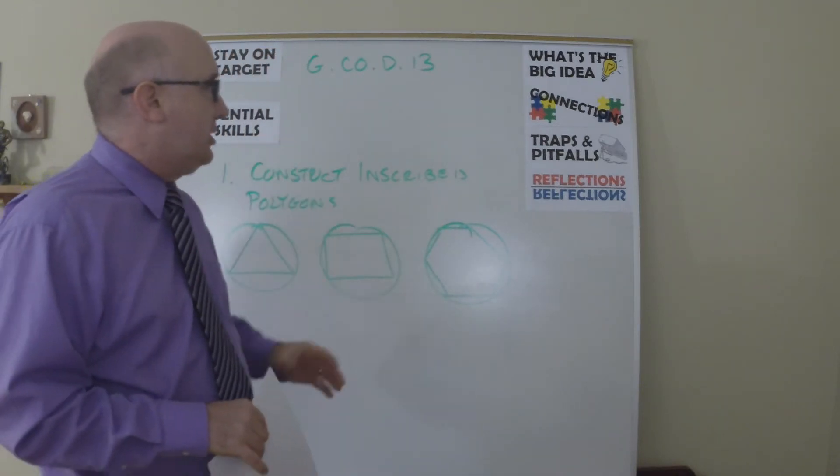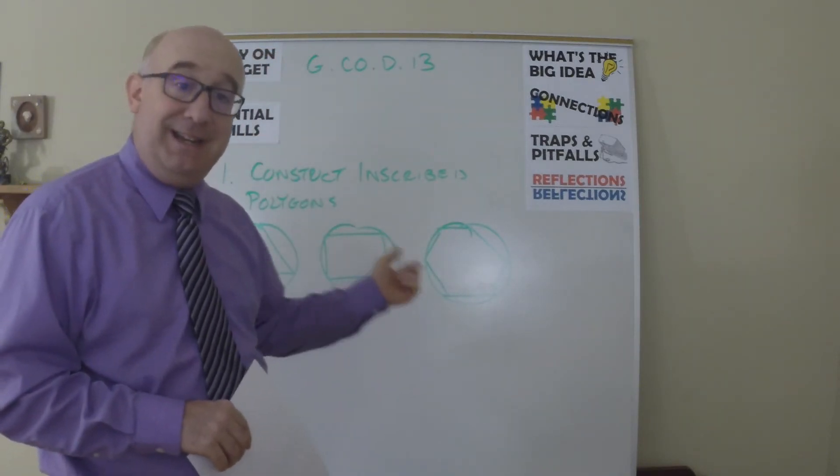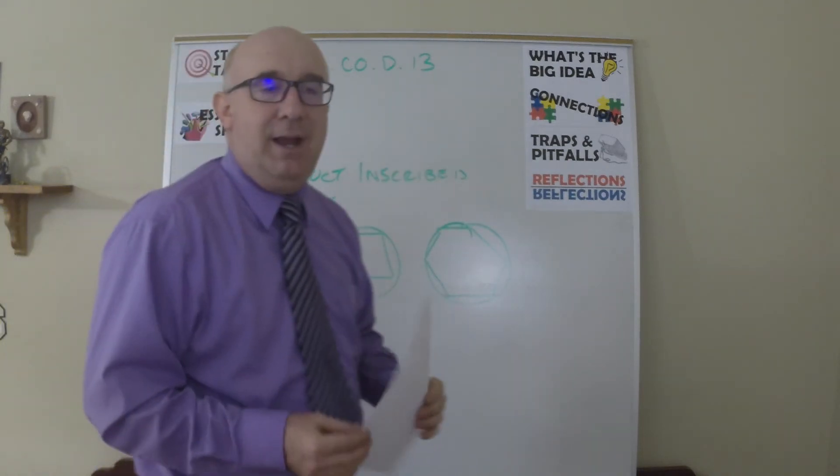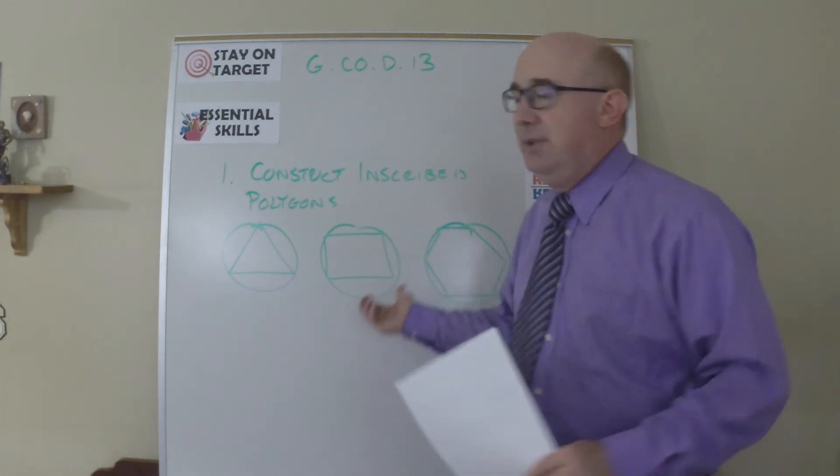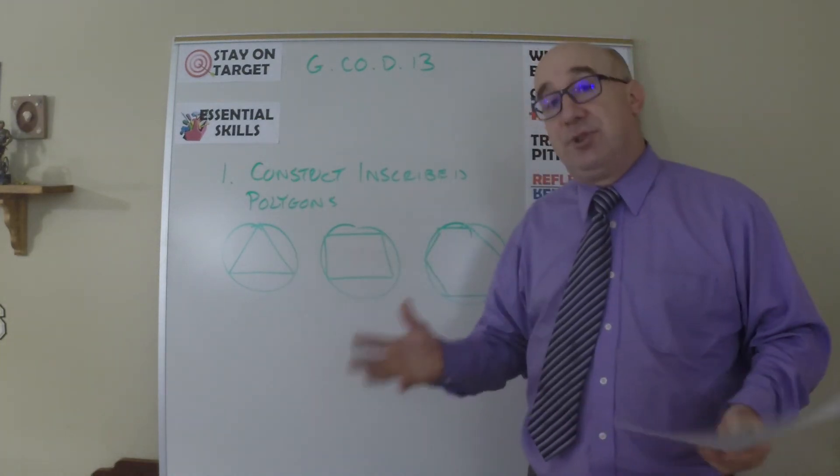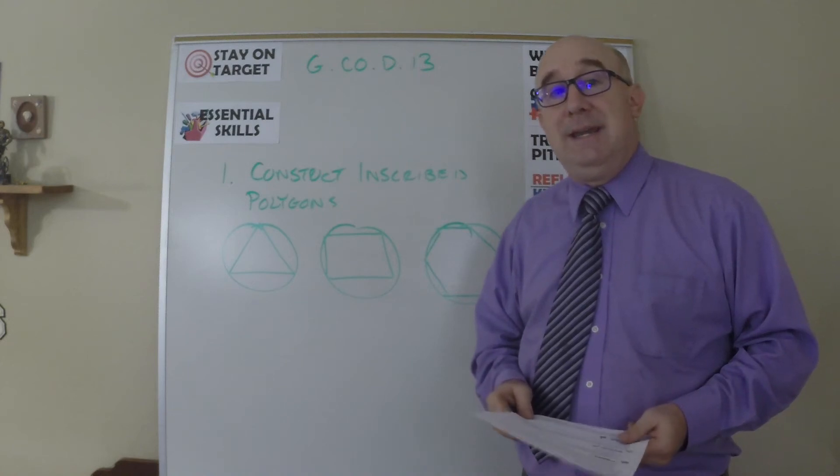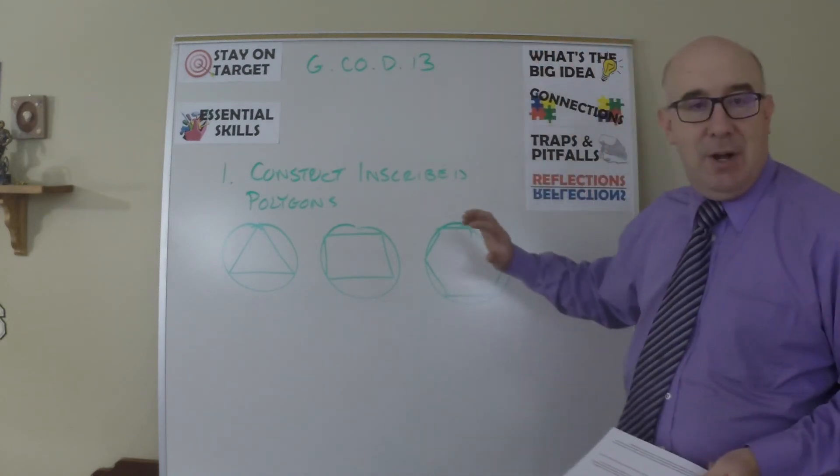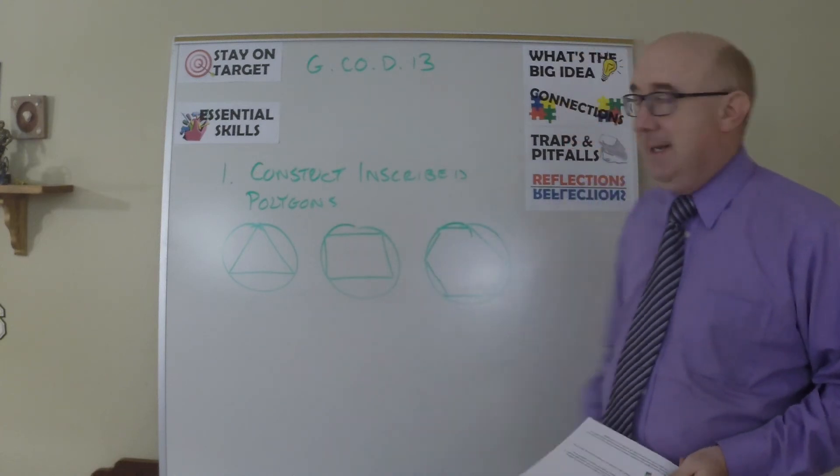Nice tone set here, and this can be done again later in the year when you get to those points. What's the big idea? Big idea is that these are unique or special constructions, unique and special shapes, and that they are easily constructed inscribed in a circle. So we talk about inscribed, circumscribed ideas here.